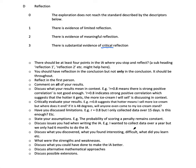Discuss what you discovered, what you found interesting or difficult, and what you learned. What were the strengths and weaknesses? Talking about the weaknesses of your IA is great — that's critical reflection. Discuss what you could have done to make the IA better, what extensions you could have done, and whether there were alternative mathematical approaches — another way you could have done it. You don't have to do it, but at least mention it.